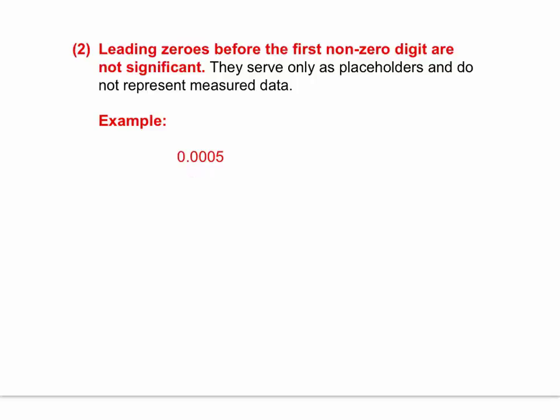All four of these zeros that begin the number are what we call leading zeros. They're simply there to show us that this is not five, this is not five tenths, five hundredths, five thousandths. This is five ten thousandths. It's there to express magnitude.